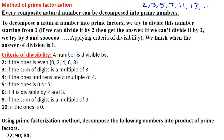The criteria of divisibility: a number is divisible by 2 if the ones digit is even; by 3 if the sum of digits is a multiple of 3; by 4 if the ones and tens form a multiple of 4; by 5 if the ones digit is 0 or 5; by 6 if it is divisible by both 2 and 3; by 9 if the sum of digits is a multiple of 9; by 10 if the ones digit is 0.